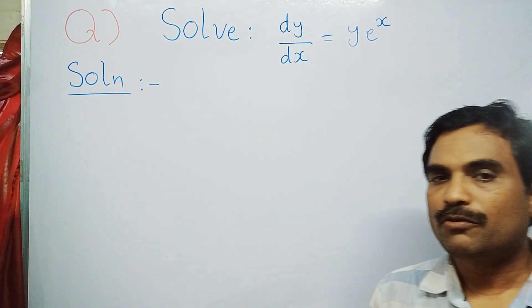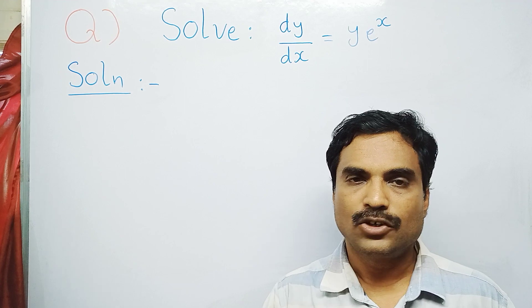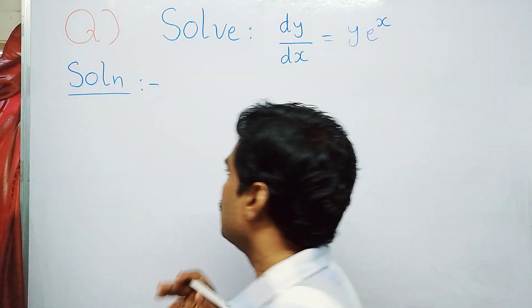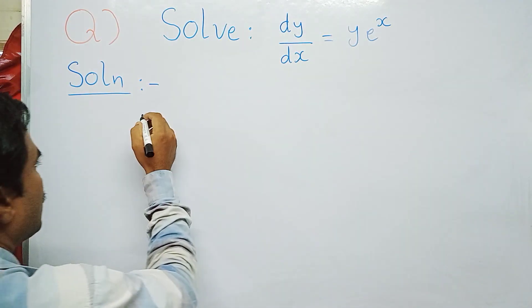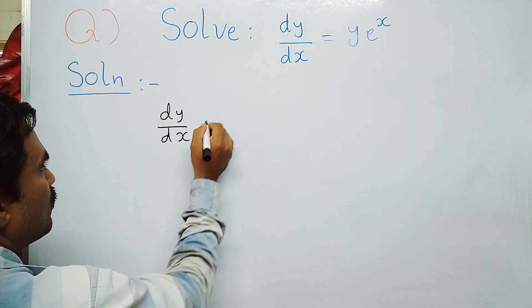To solve this problem, first we apply variable separable method and after that we integrate on both sides to get the solution. So first, write what is given here: dy/dx = y·e^x.